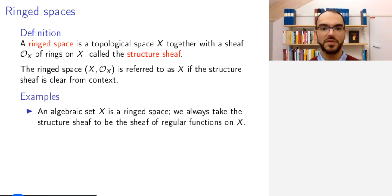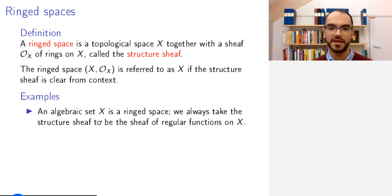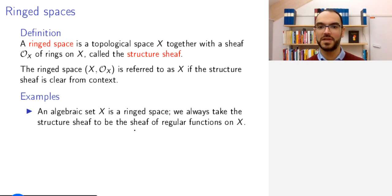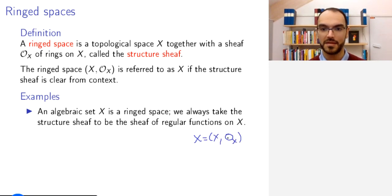For example, an algebraic set is a ringed space. And when we consider our algebraic sets as ringed spaces, we always take the structure sheaf to be the sheaf of regular functions. So we just write X, and we mean X with O_X, the structure sheaf.